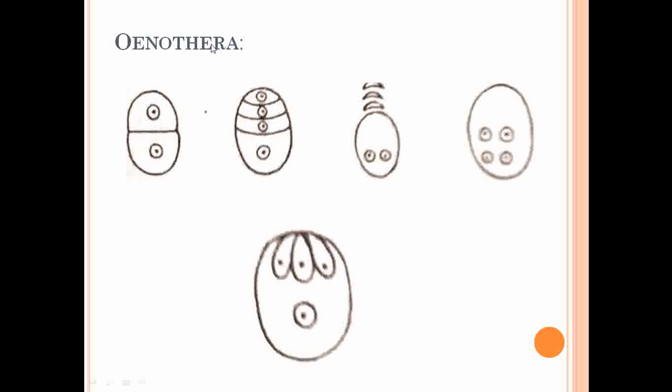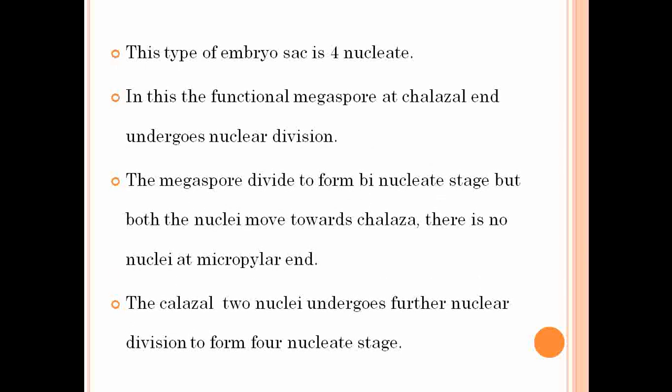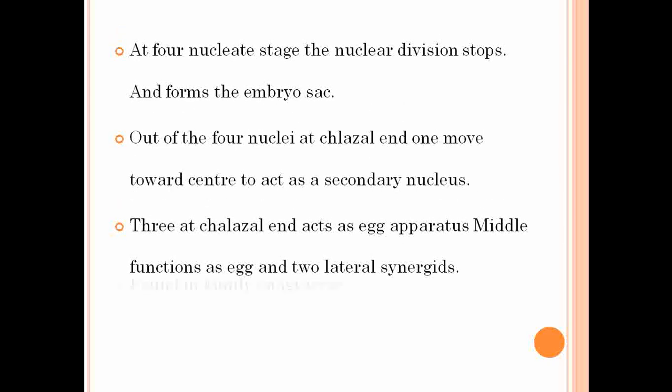In the Oenothera type of embryo sac, the three cells at the micropylar end degenerate, and the embryo sac is formed from the chalazal megaspore. This type is observed in the family Onagraceae, which is why it is called the Oenothera type.